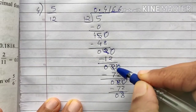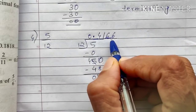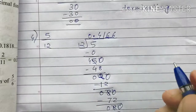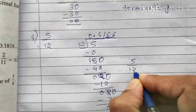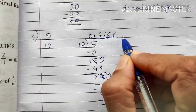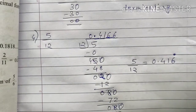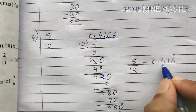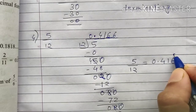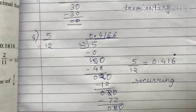Every time the remainder is 8, and the digit 6 keeps repeating. When you see a number repeating, that is the time to stop. This is called a recurring decimal — the number repeats again and again. So 5 upon 12 equals 0.416̄, and since 6 is the repeating digit, we write it once and put a dot over it.